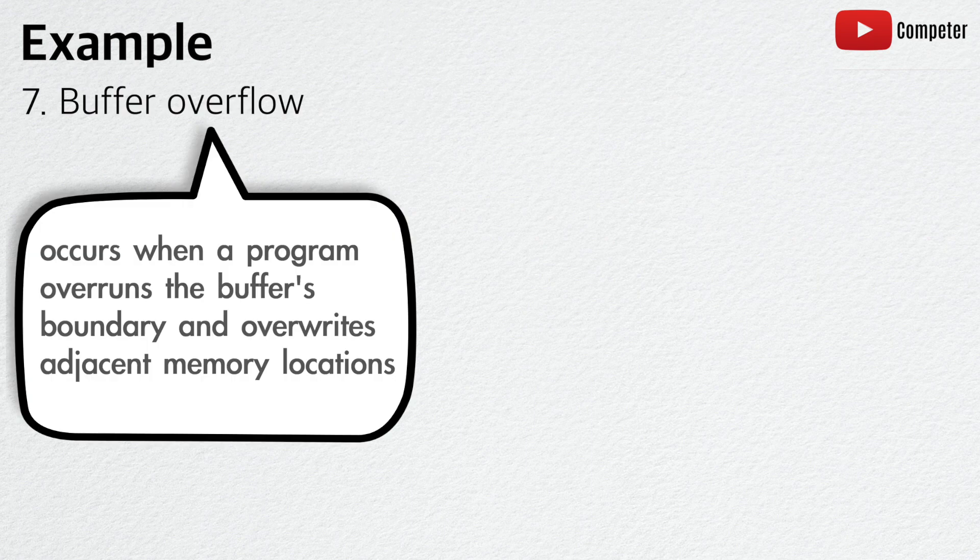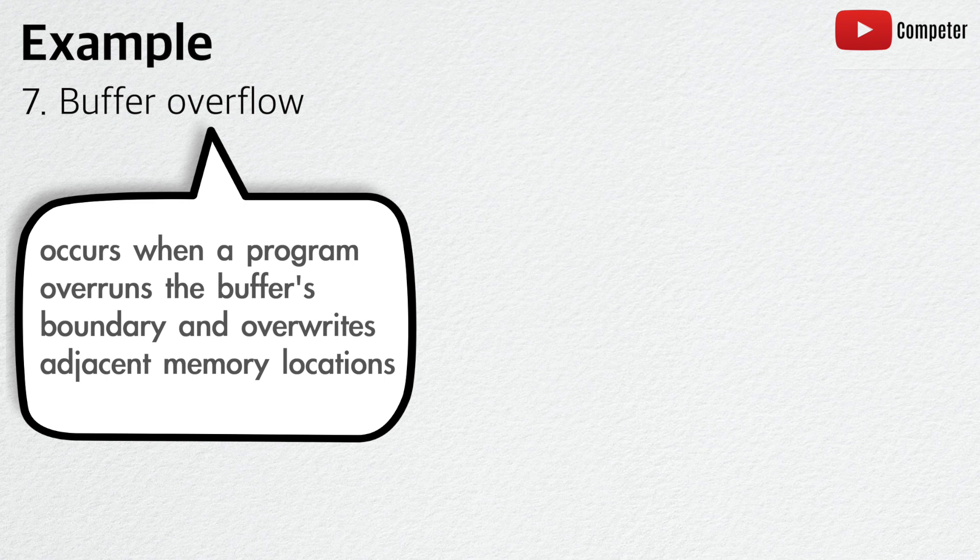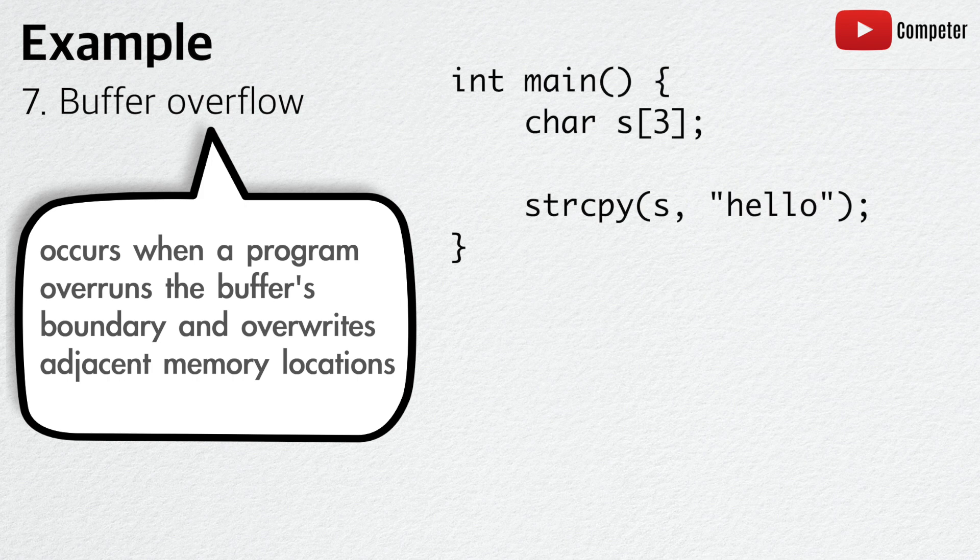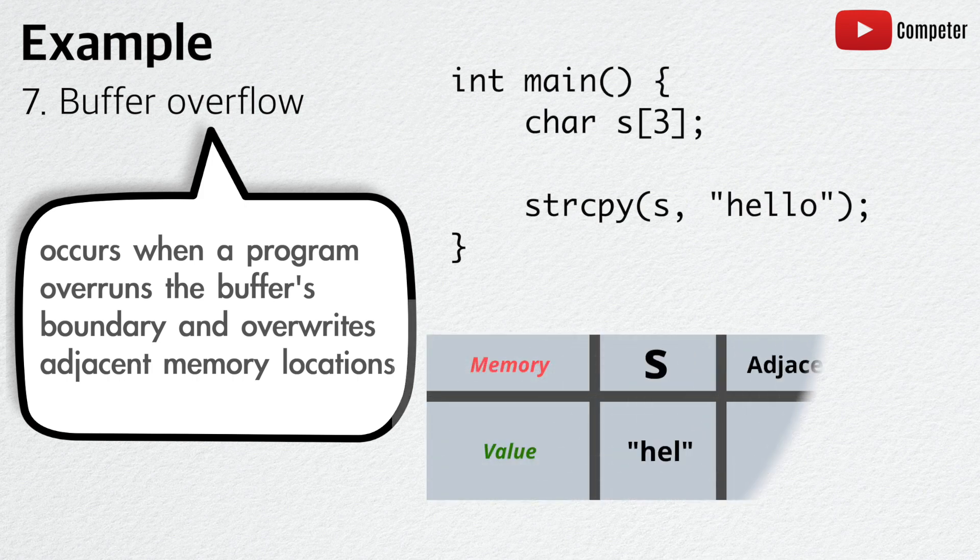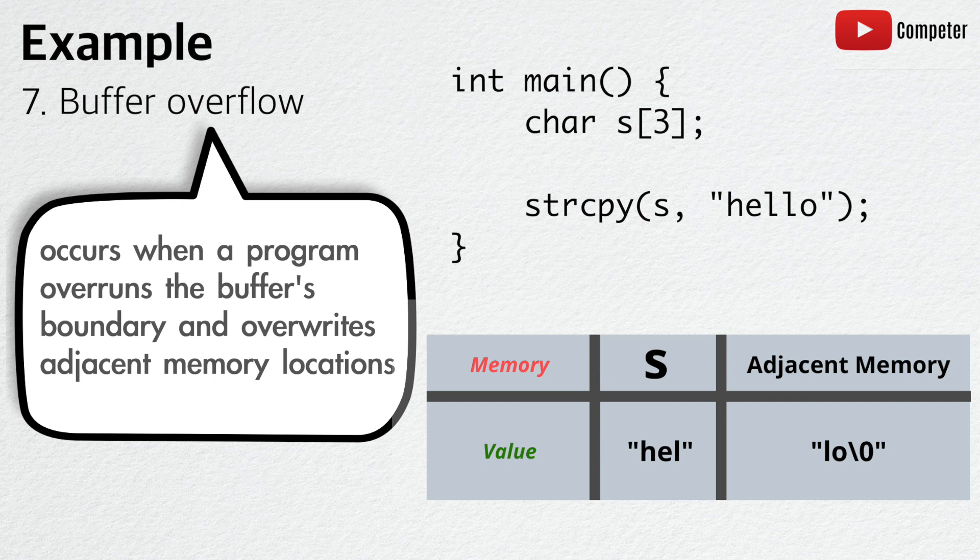A buffer overflow occurs when a program, while writing data to a buffer, overruns the buffer's boundary and overwrites adjacent memory locations. For example, a variable s is declared to hold only three characters. When the program attempts to copy the string to the buffer of s, buffer overflow occurs, causing segmentation fault.